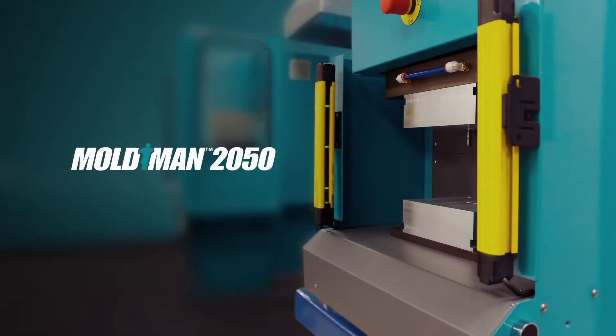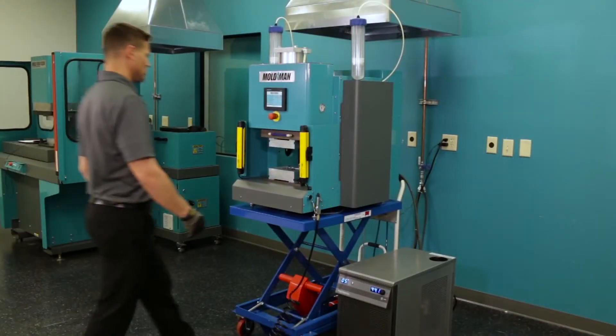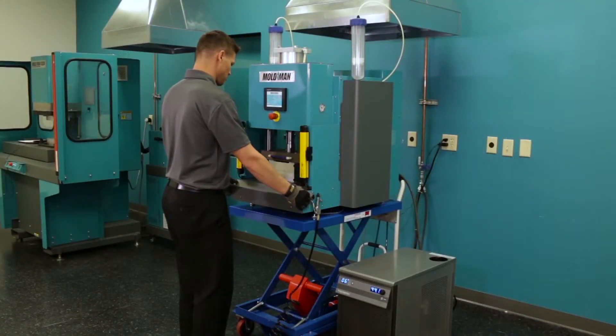Moldman Systems, the world leader in low pressure molding technology, presents the Moldman 2050 Thermoset Tabletop Machine. The Moldman 2050 is a small and versatile mix-on-demand molding machine capable of sealing sensitive electronics and producing stand-alone parts such as silicone optics.